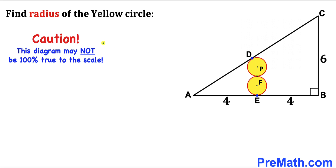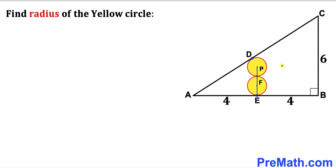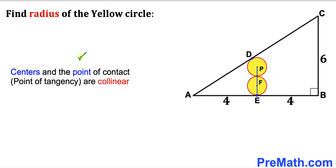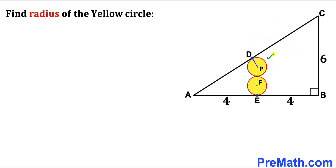Please keep in mind that this figure may not be 100% true to scale. In our first step, I have connected the centers P and F with the point of tangency E. The crucial fact is that the centers and the point of tangency are collinear — all these points lie on the very same line. In the next step, I have connected center P with the point of tangency D as well.